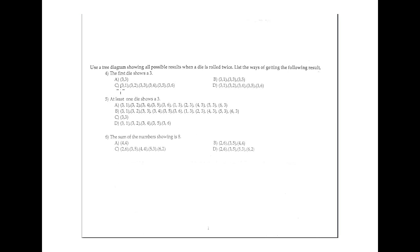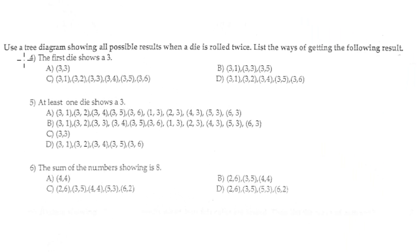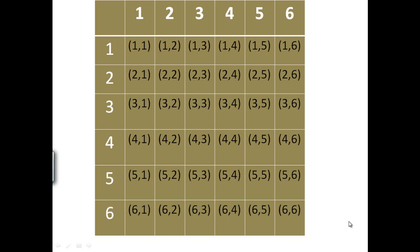Numbers 4, 5, and 6 are about using a 3D tree diagram, but instead let's use a product table — a much better approach because it's a two-task problem. We roll the die twice. Using the product table when rolling a die twice, we have 36 combinations: 6 times 6.